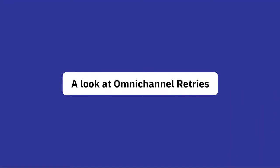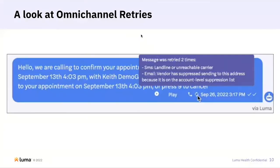Next up, looking at what Omnichannel Retries actually looks like in Luma. I'll help you get familiarized with what you'll see in the product and where you can actually see when messages are being retried. This is an example of a retry that was eventually successful. As you can see, we retried over SMS and email, and then we were finally able to deliver the message over voice. That's the power of this — if a patient has a contact for each one of these channels, we have a much higher likelihood of actually getting the message to the patient.